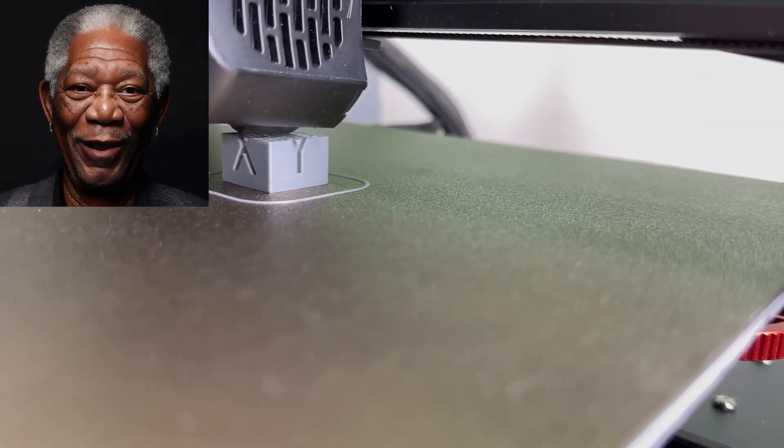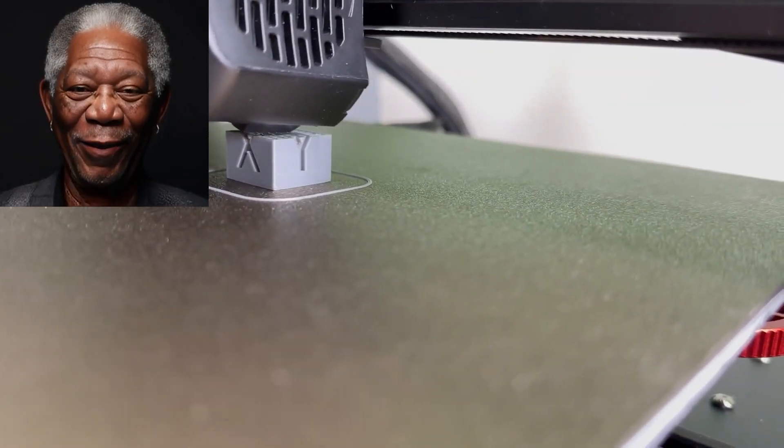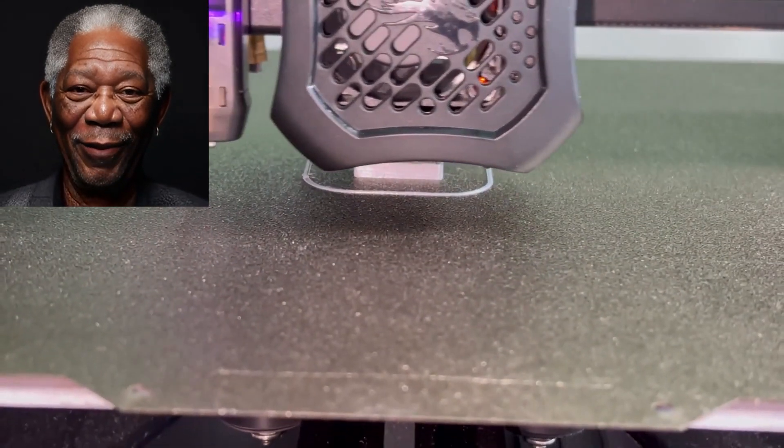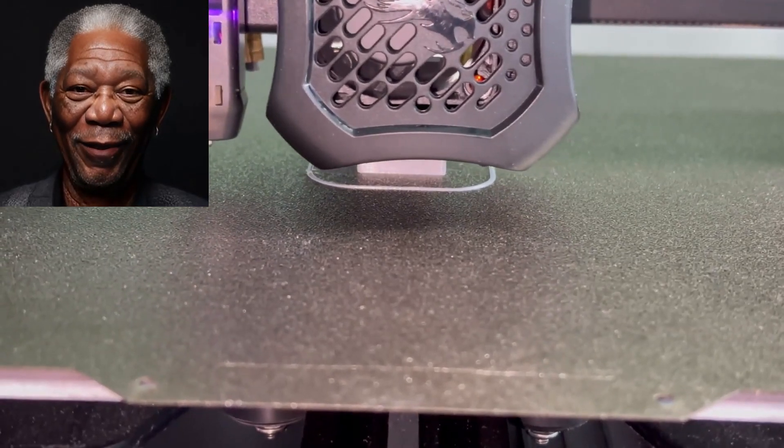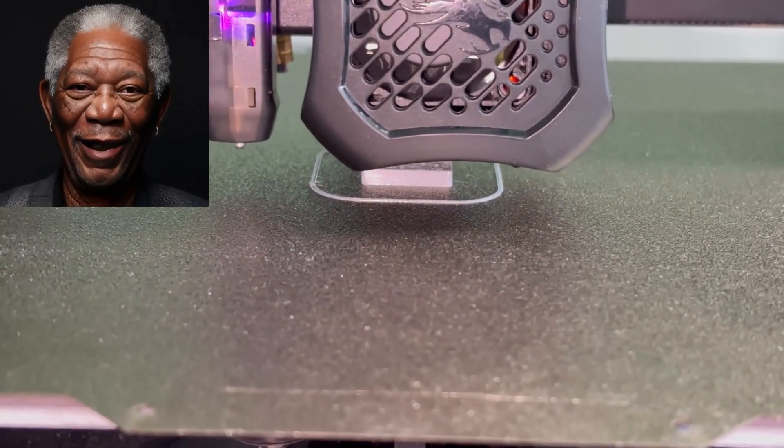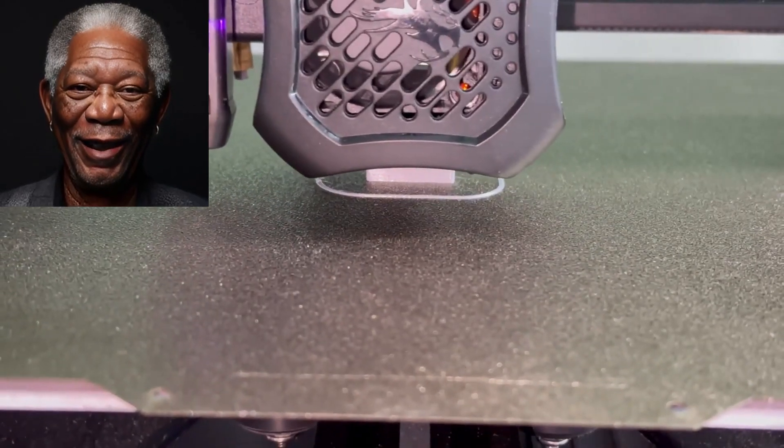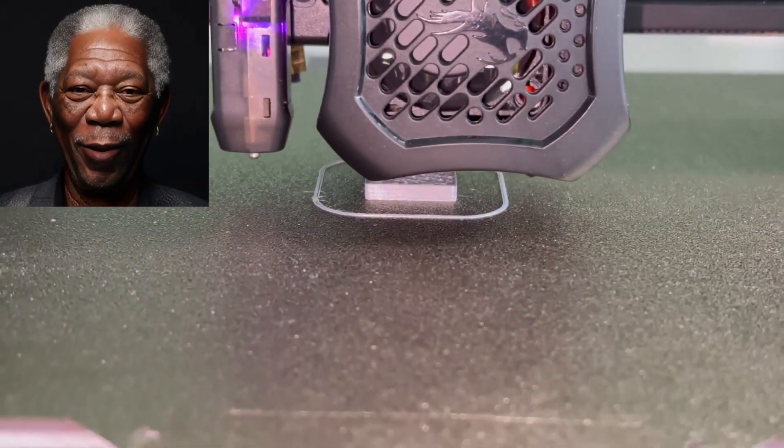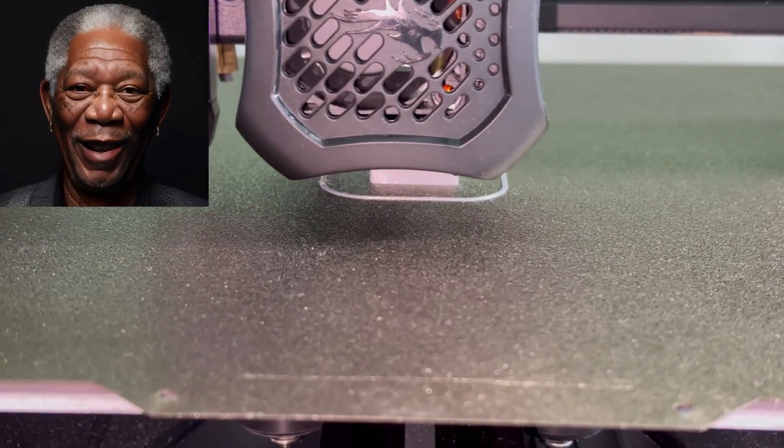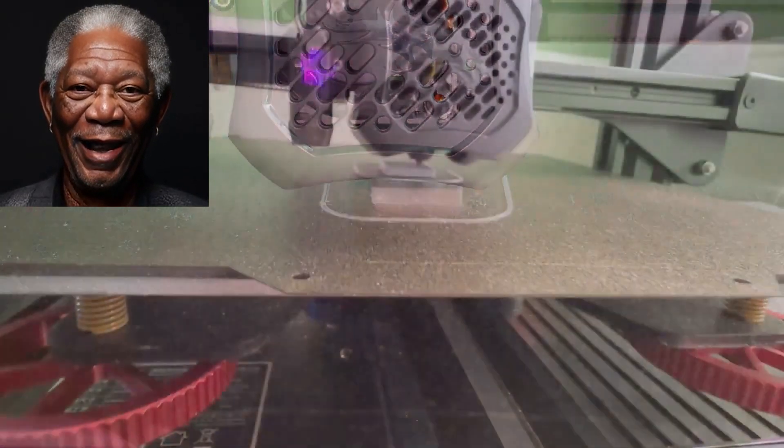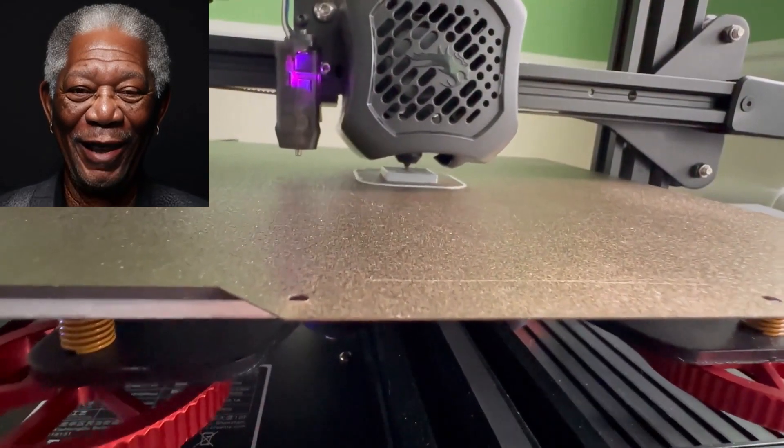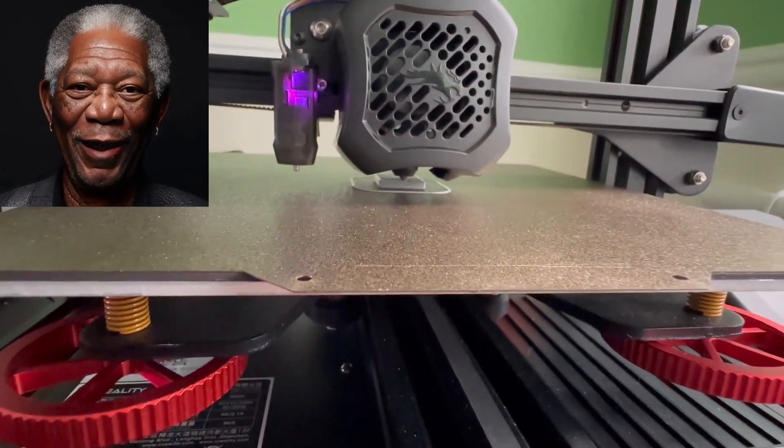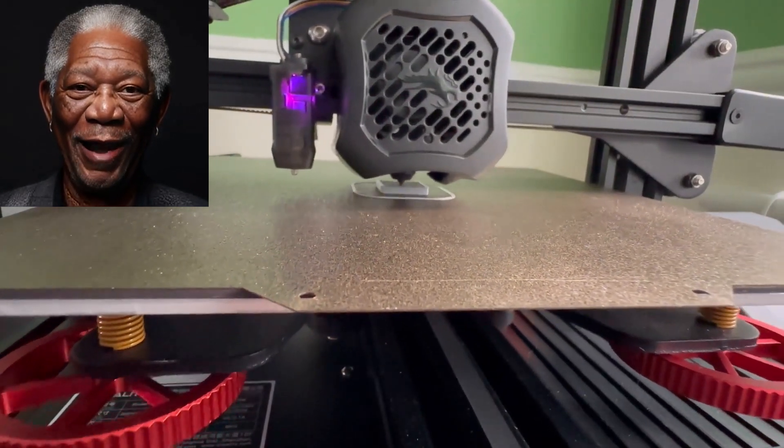Number 10: Enhanced adhesion with PEI bedsheet. Looking to improve print adhesion without messy adhesives? Enter the PEI bedsheet. This surface ensures excellent adhesion during printing and easy print removal once completed, leaving your prints with a smooth and professional finish. The PEI surface is perfect for a wide range of filament materials, including PLA, ABS, PETG, and more. It eliminates the need for additional adhesives or tapes, simplifying the printing process and reducing the risk of print damage during removal.